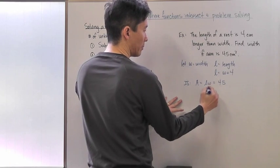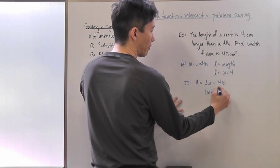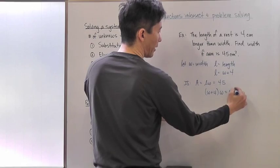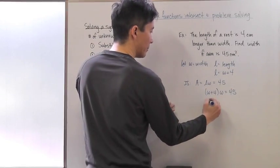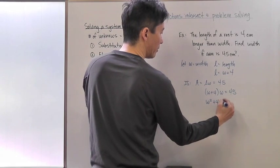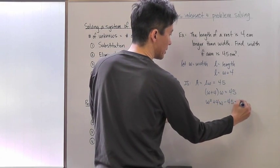Since l = w + 4, we have (w + 4) × w = 45. Solving normally, this becomes w² + 4w - 45 = 0.